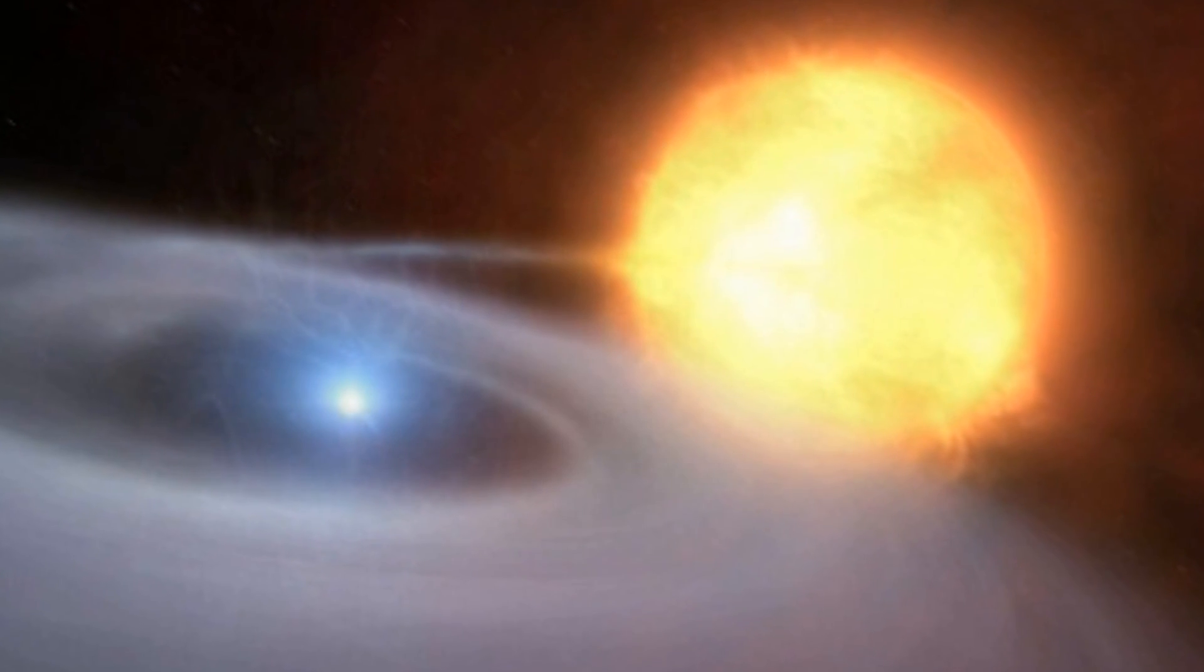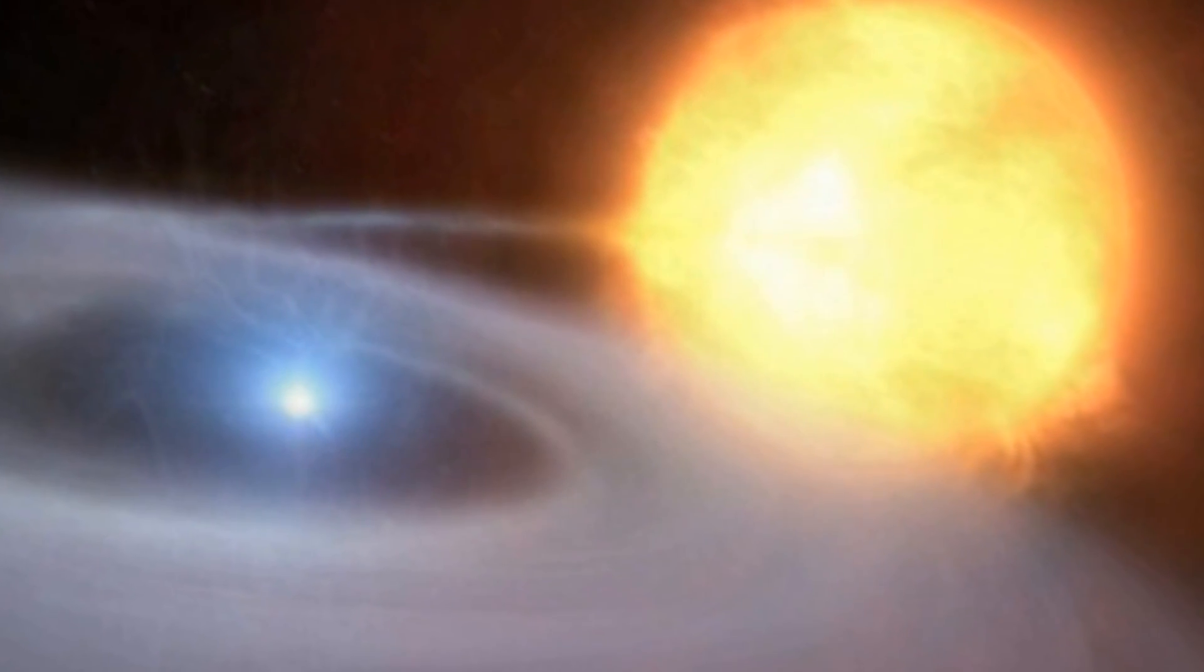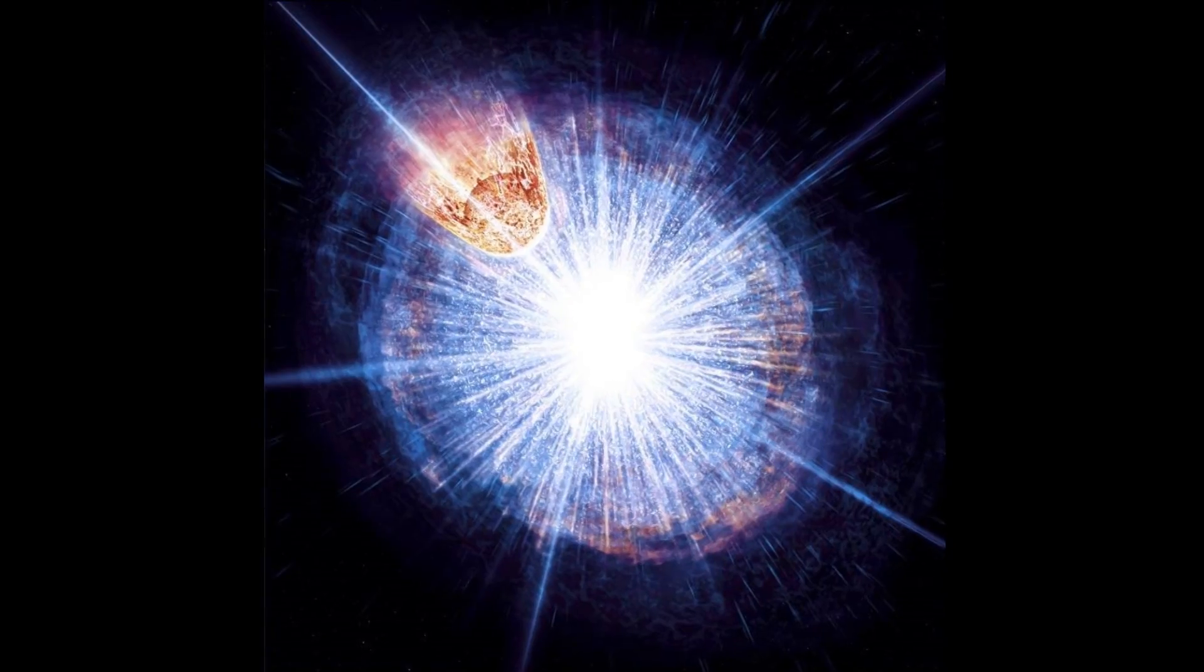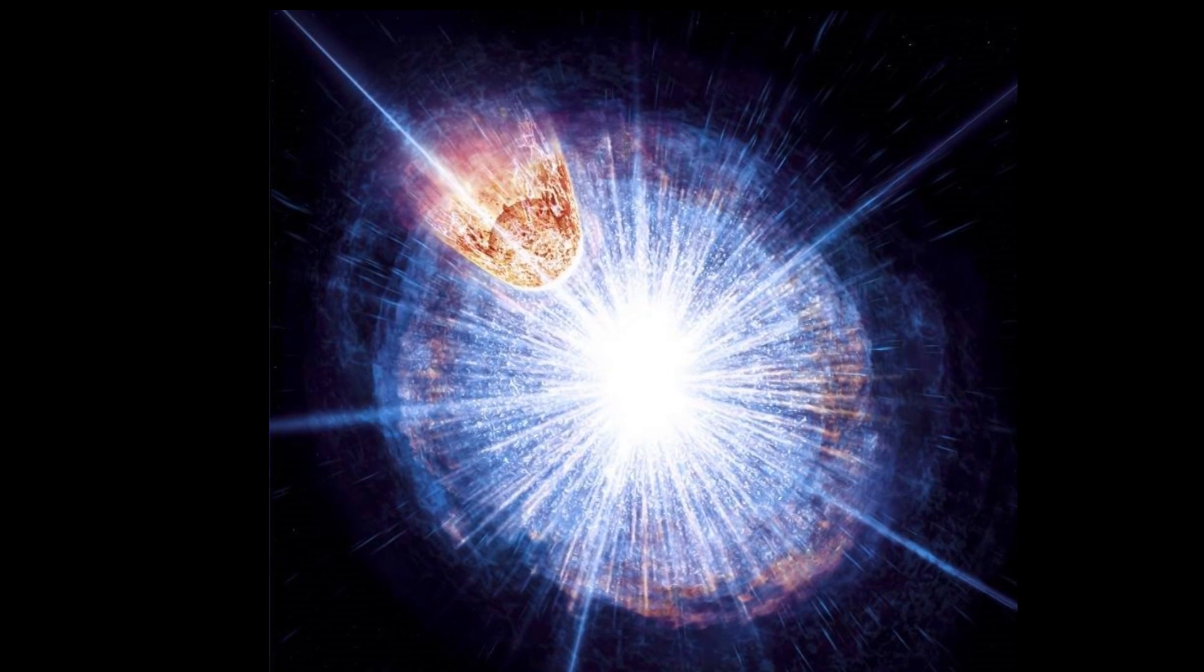A popular model for the progenitor system, known as the single degenerate scenario, is illustrated here. This scenario has a carbon-oxygen white dwarf accreting material from a solar-like main sequence companion until the white dwarf reaches a critical mass when it explodes as a Type 1A Supernova. The Supernova ejecta will then impact the companion, which is shown in this cartoon.